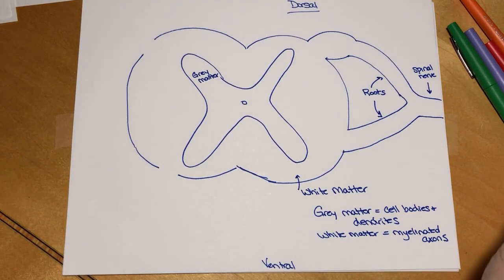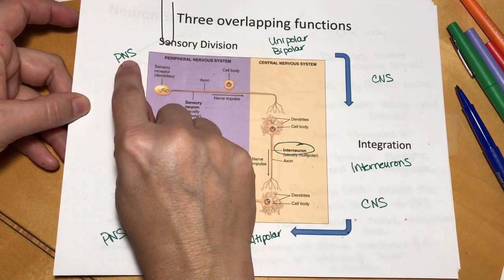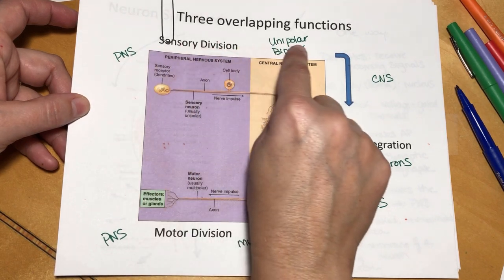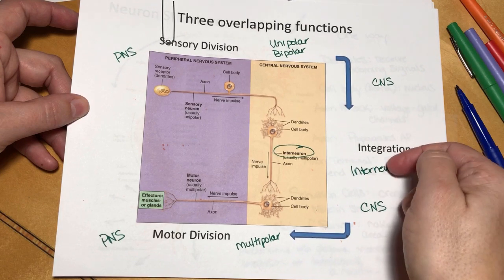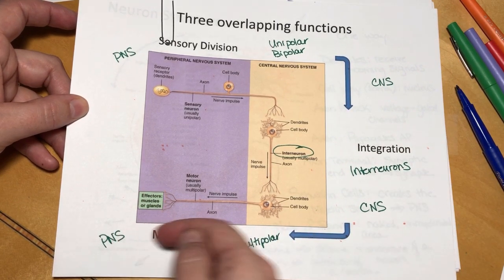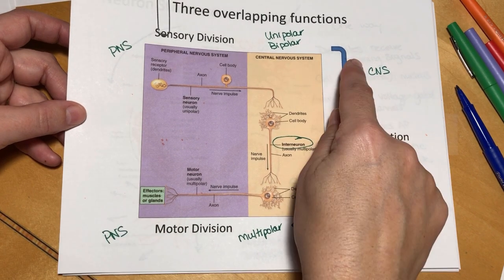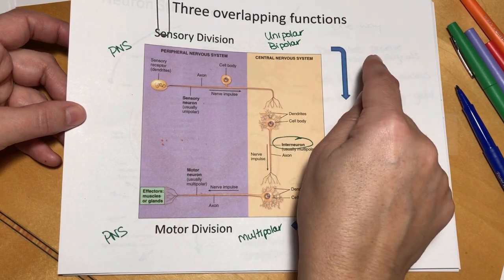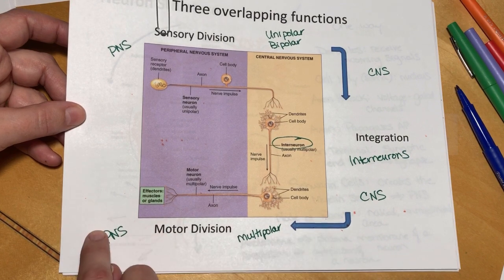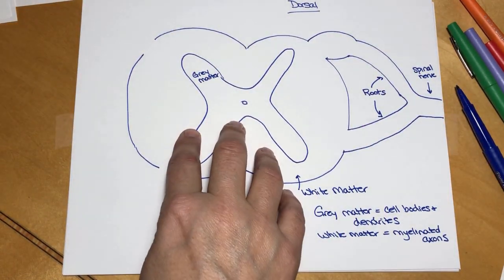We've already talked about this in a previous video. We have the peripheral nervous system. The sensory division is going to bring in information from the PNS to the CNS, which is the brain and the spinal cord. Then there's going to be some integration that goes on with interneurons, and then some type of motor information is going to go out — either skeletal motor or autonomic nervous system motor, which runs your smooth muscle, your glands, and your cardiac muscle — and it'll go back out to the PNS. In the sensory division we're going to have unipolar or bipolar neurons bringing in sensory information, and all of the motor neurons are multipolar. So we're going to put that information on our drawing now.